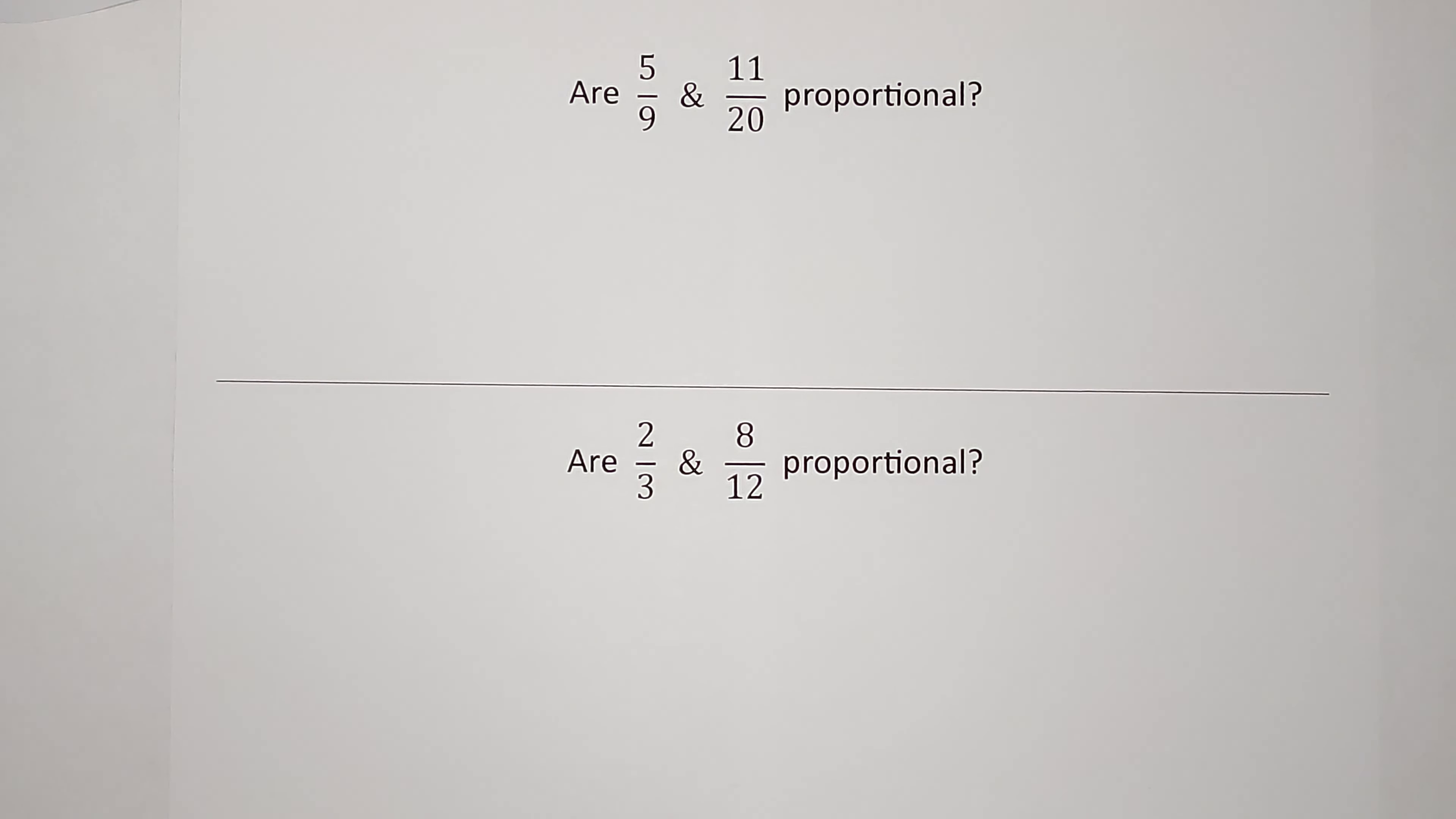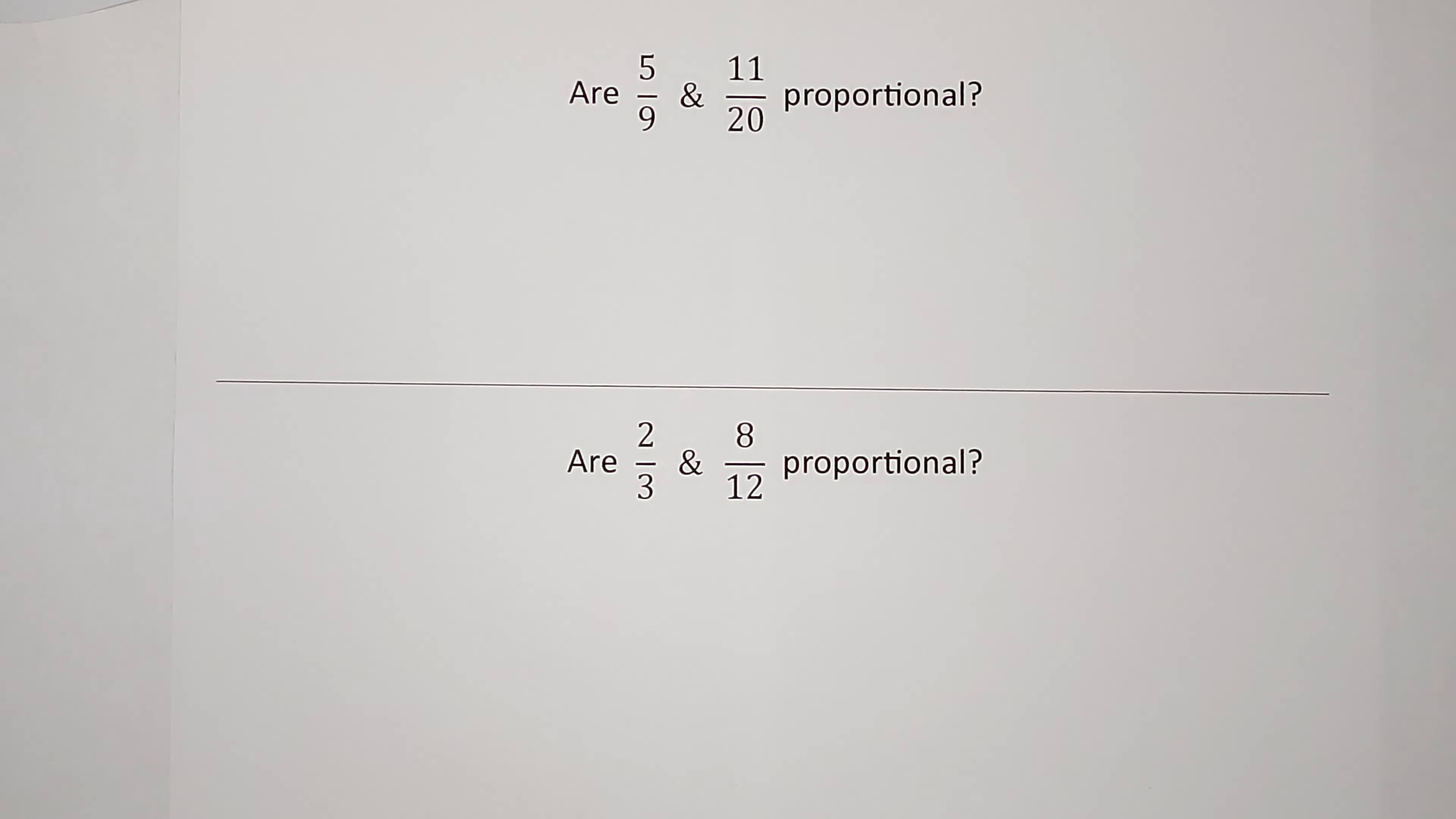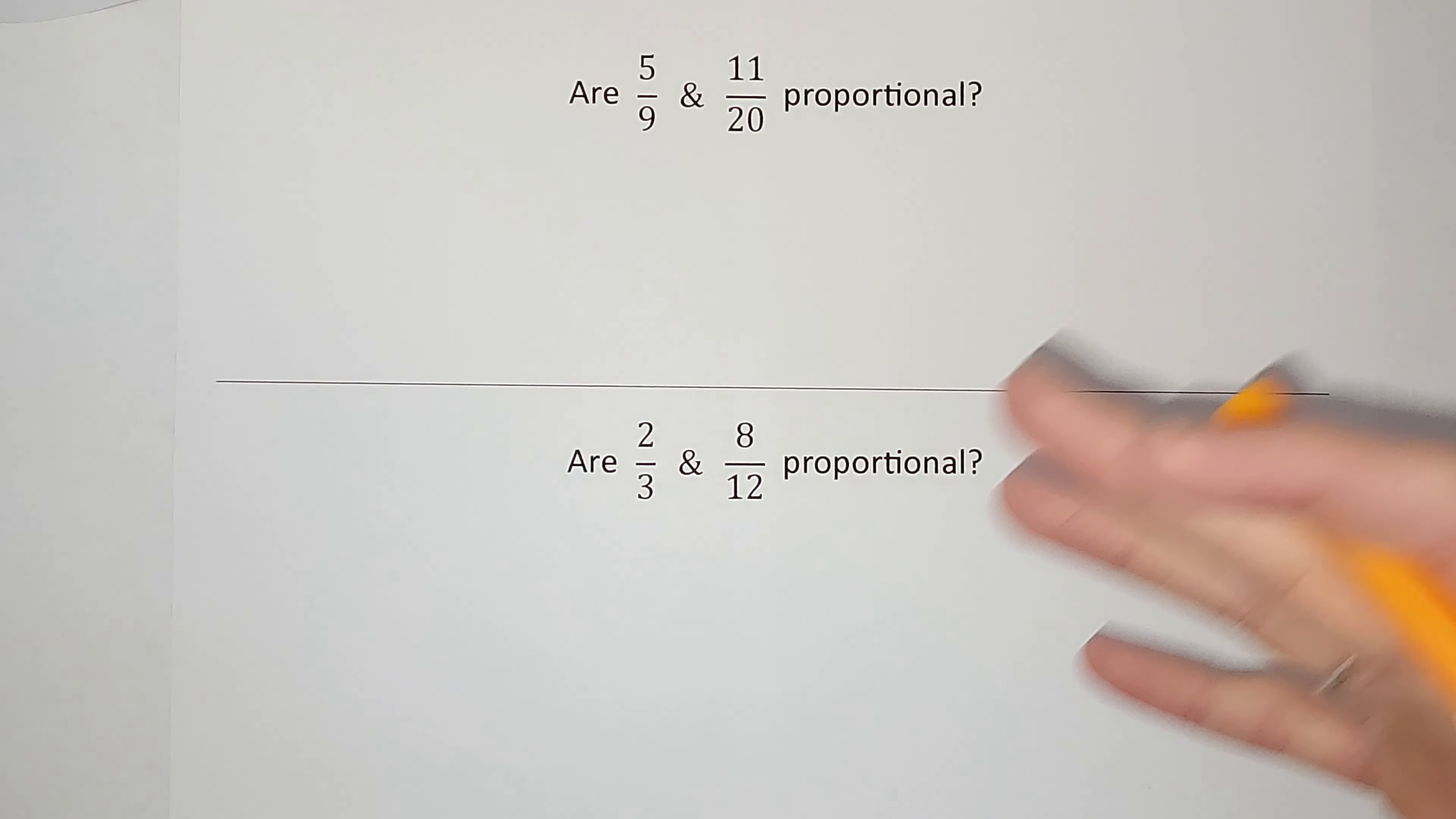Hey guys, we're talking proportions today. So we're being asked if these two fractions are proportional, which basically is asking could they simplify down to the same fraction, or if you had something that was 5 by 9, is something that's 11 by 20 the same shape but a little bigger? Just asking basically if these fractions are related to each other.